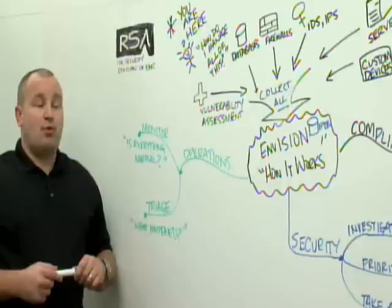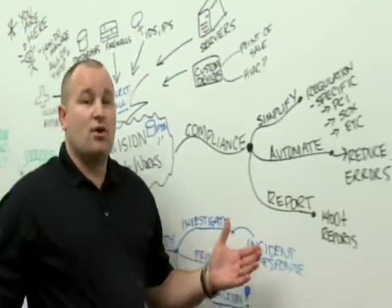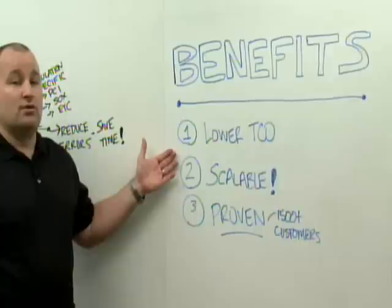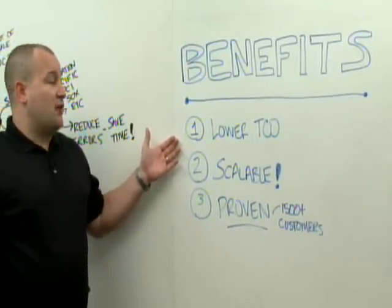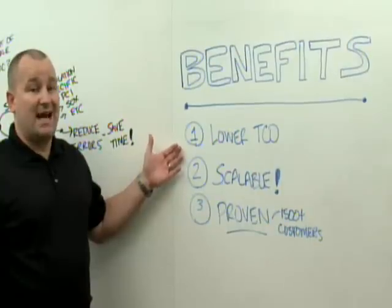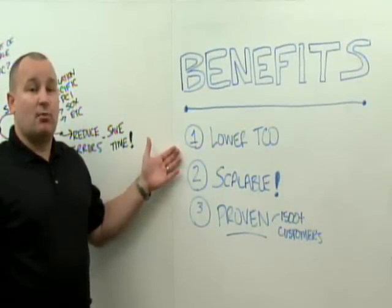To that point, if I can summarize, we're going to look at the benefits overall of an Envision system. First of all, lower overall total cost of ownership. Because you can automate, because you can centralize and run these through standard reports, and take alert output actions with these types of events, you can vastly cut down the operational costs.